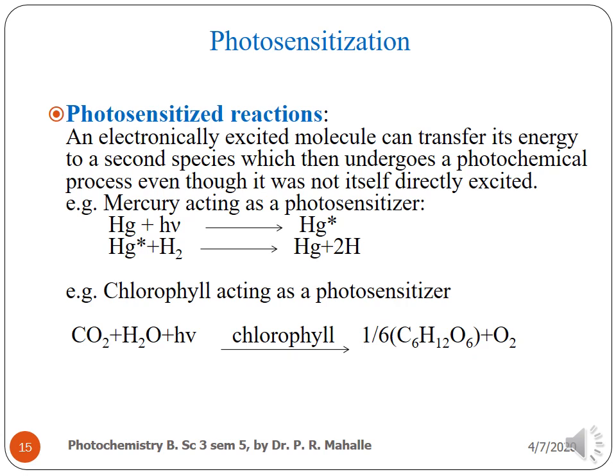Now photosensitization. In photosensitized reactions, an electronically excited molecule can transfer its energy to a second species, which then undergoes a photochemical process even though it was not itself directly excited. Examples include mercury and chlorophyll acting as photosensitizers.